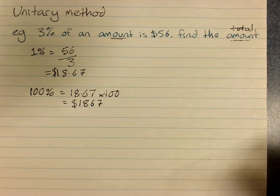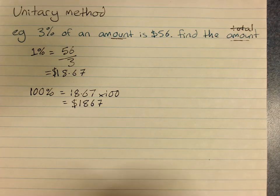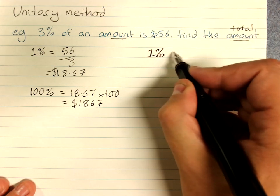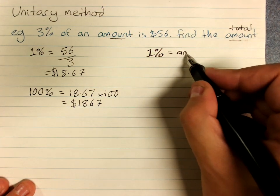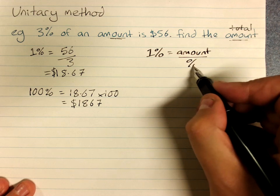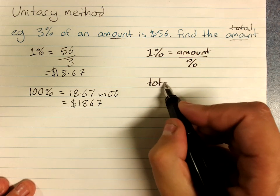So the working for that, if you want a formula, is you find 1% by doing the amount that was given divided by the percentage.